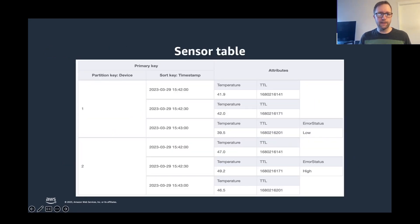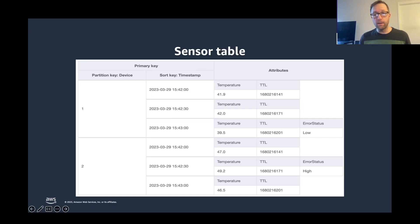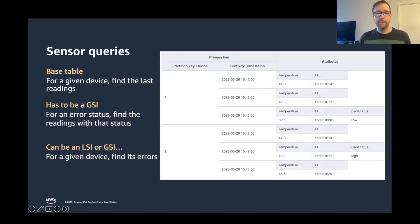Here's some sample data — it's devices. Each one has a device number. They're sending in temperature data on a timestamp, looks like every 30 seconds. Once in a while the temperature is too low and we get an error status low. Sometimes it's too high and we get an error status high. Against this, I can do various queries — for a given device, find the last 10 readings. I can do that against the base table as a query.